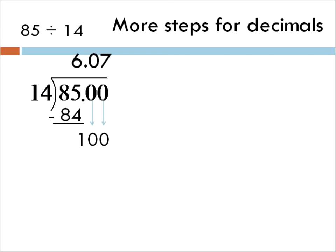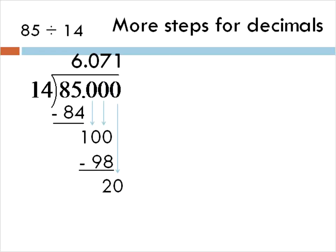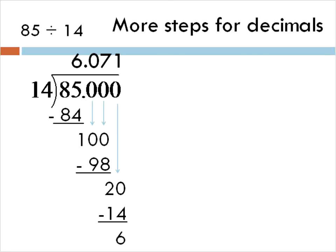How many times does 14 go into 100? We'll say 7. 7 times 14 is 98. We'll subtract — 100 minus 98 gives us 2. It's not a nice even number at the bottom, so we're going to add another zero and continue this process. Bring it down. How many times does 14 go into 20? It goes in one time. 1 times 14 is 14. 20 minus 14 equals 6. It's not 0, so we're going to have to continue adding a zero.